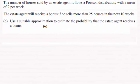Hi there, now here we've got a question based on approximating the Poisson distribution. Remember that we were told that the number of houses sold by the estate agent follows a Poisson distribution with a mean of 2 per week. The estate agent will receive a bonus if he sells more than 25 houses in the next 10 weeks. We've got to use a suitable approximation to estimate the probability that the estate agent receives a bonus.